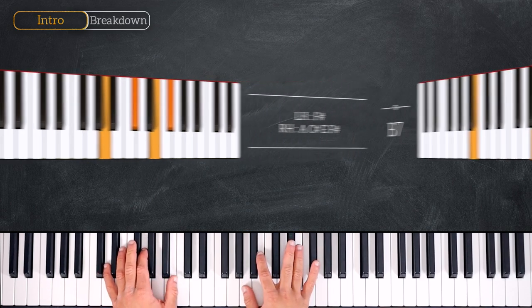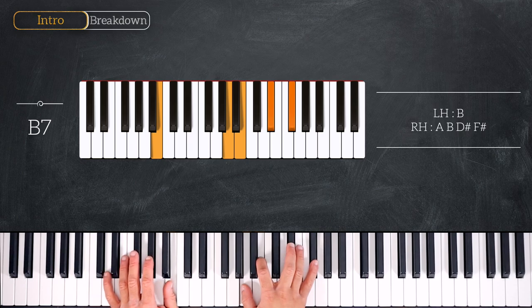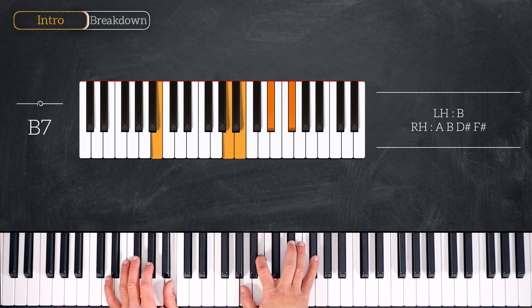Then we'll play a B7 chord. So we have B on the bottom and A, B, D sharp, F sharp on the right hand.